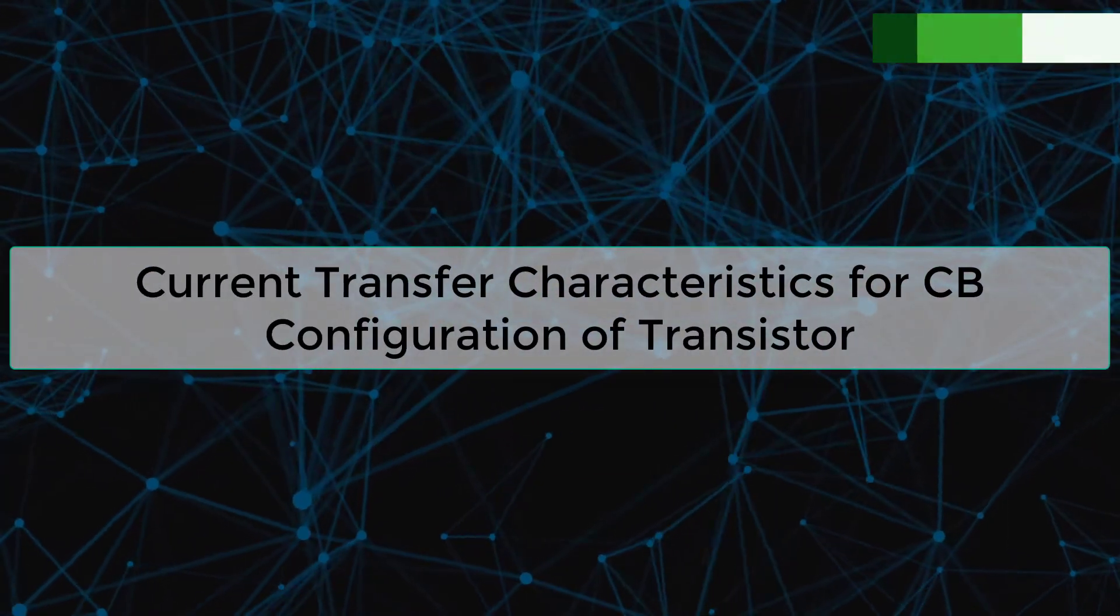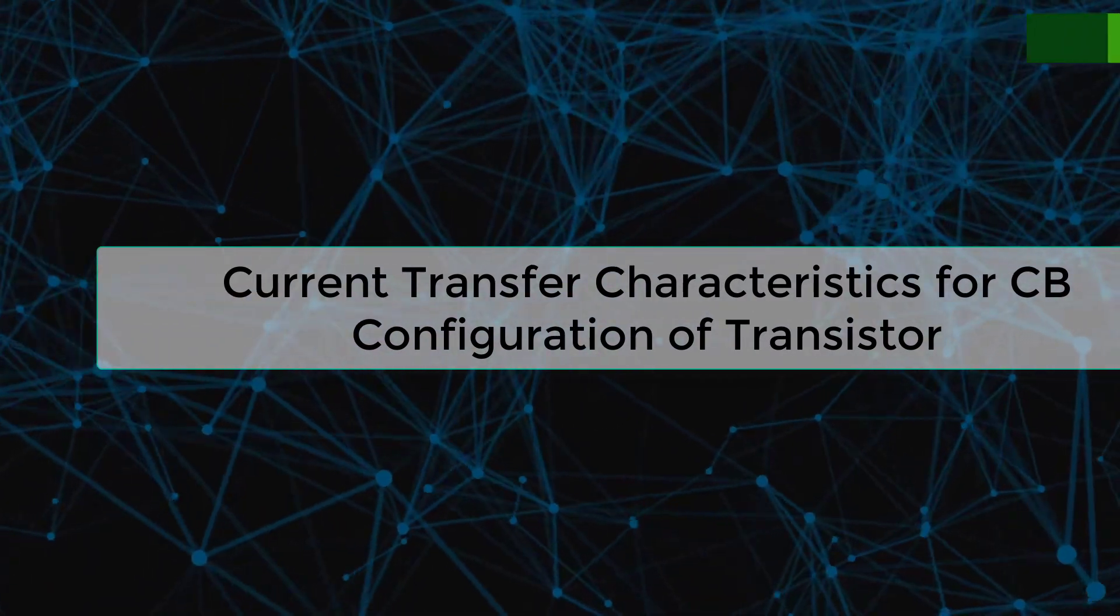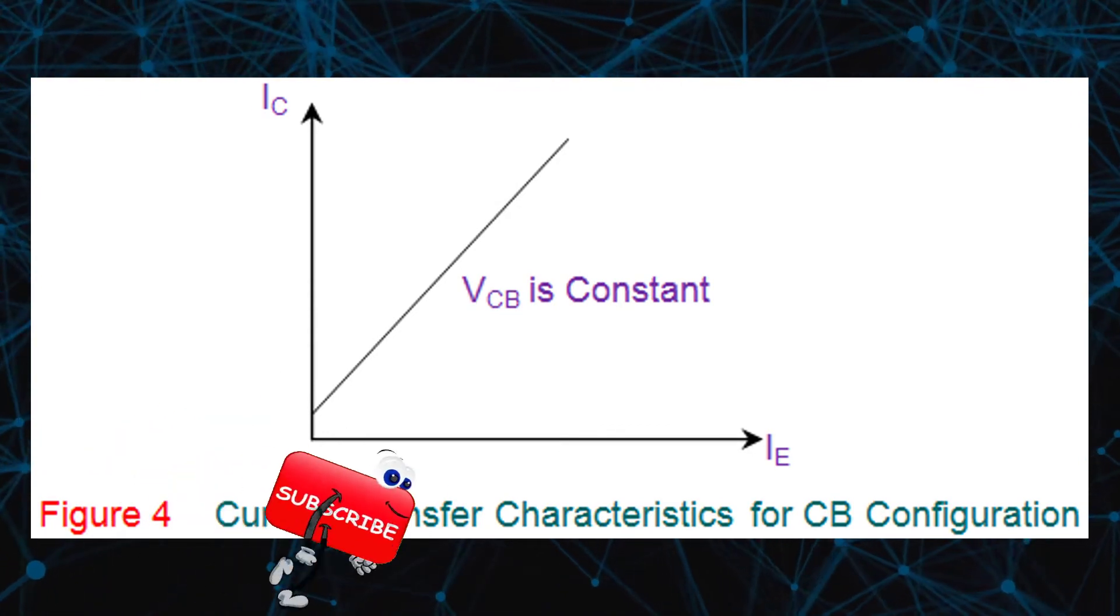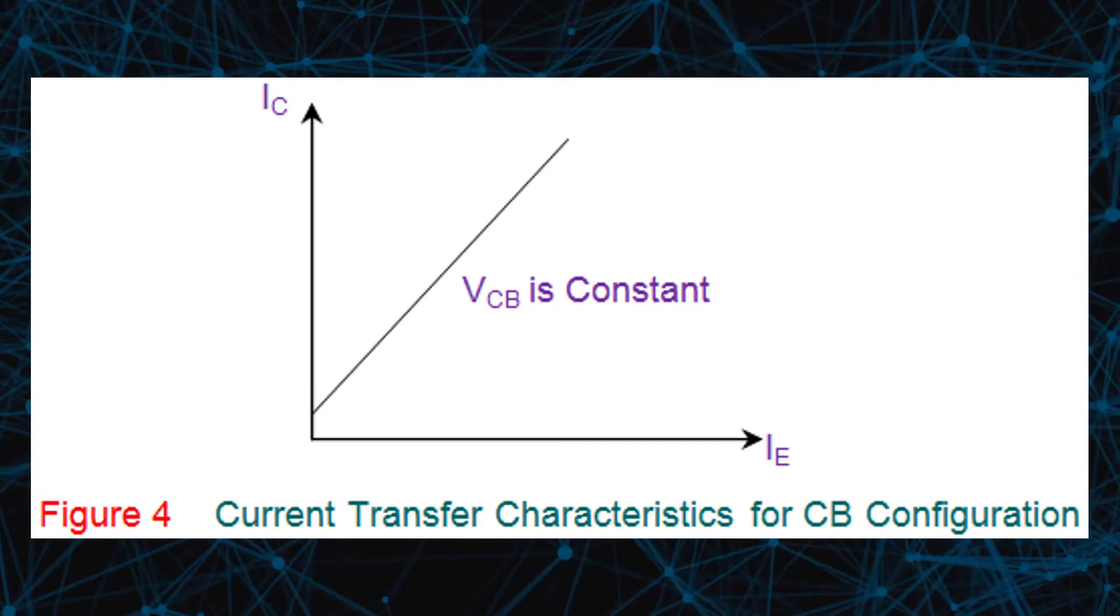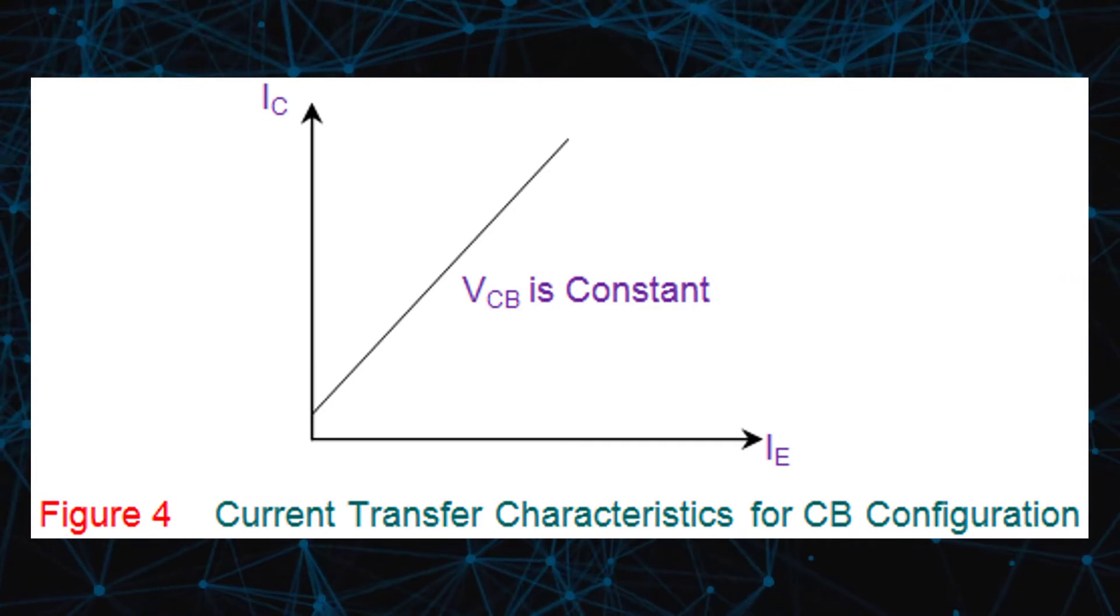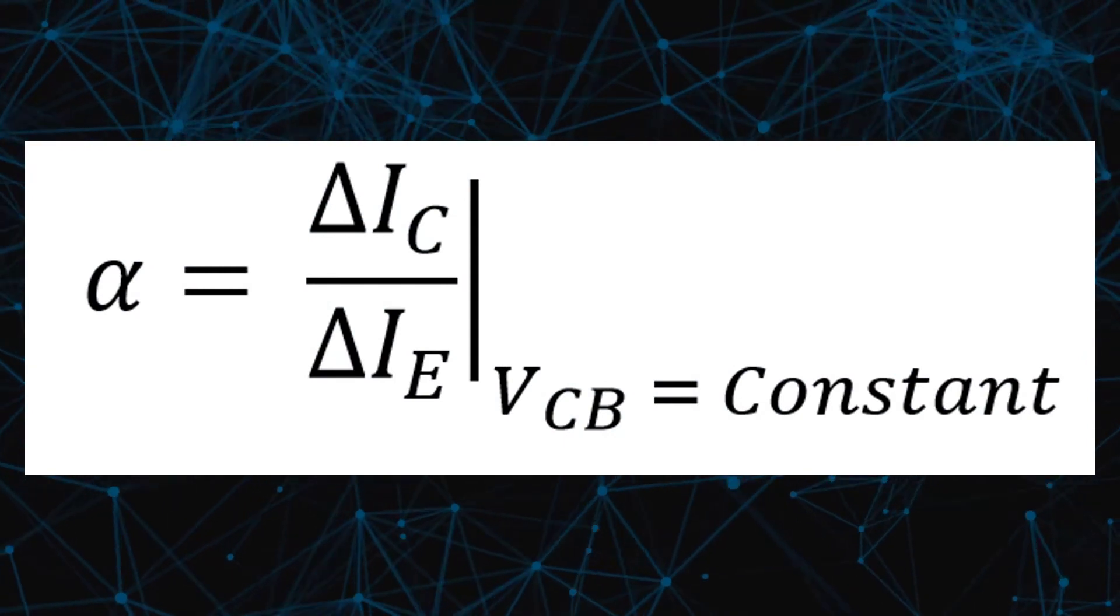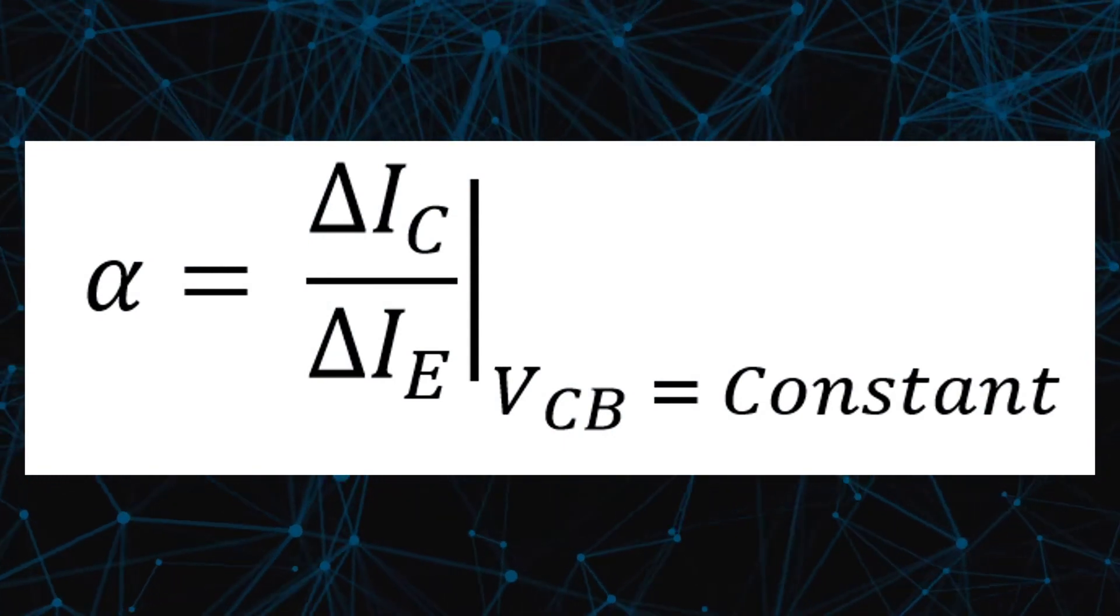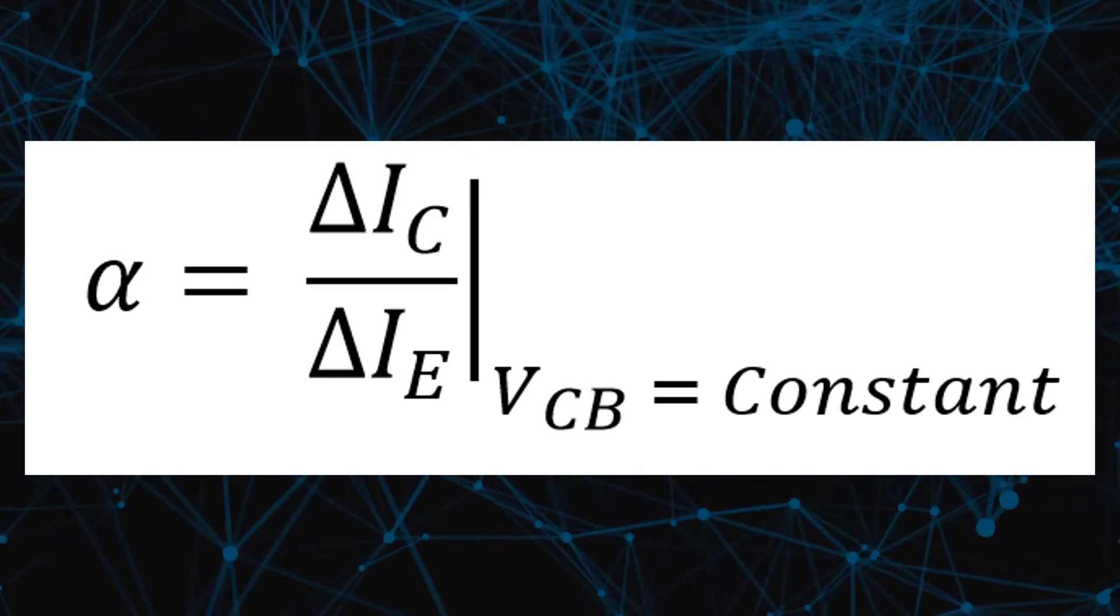Current transfer characteristics for CB configuration of transistor. The figure shows the current transfer characteristics for CB configuration, which illustrates the variation of IC with IE, keeping VCB as a constant. The resulting current gain has a value less than 1 and can be mathematically expressed as alpha equals delta IC by delta IE, where VCB is constant.